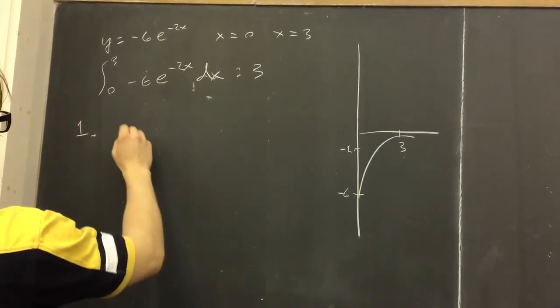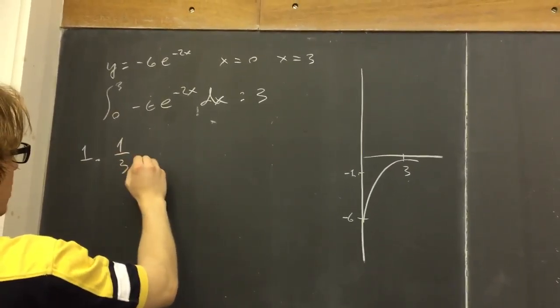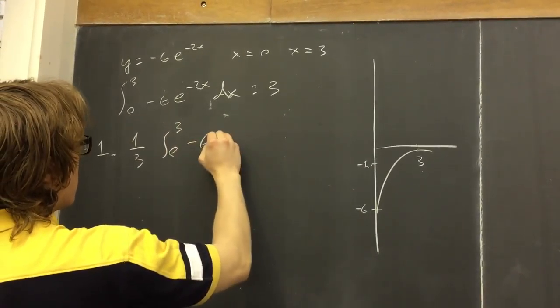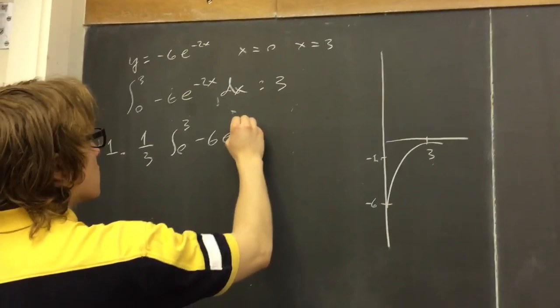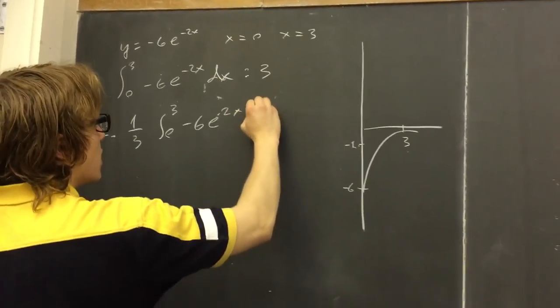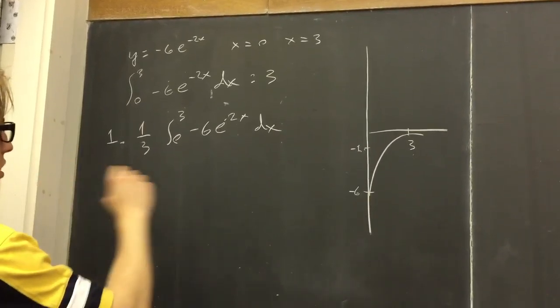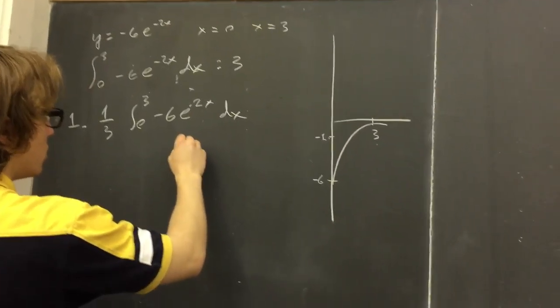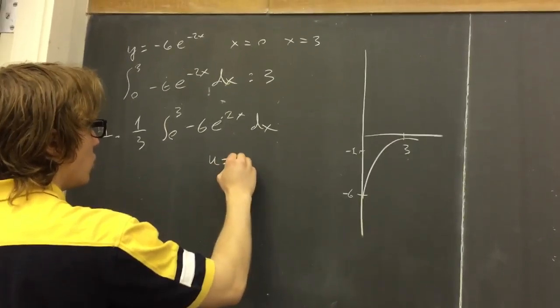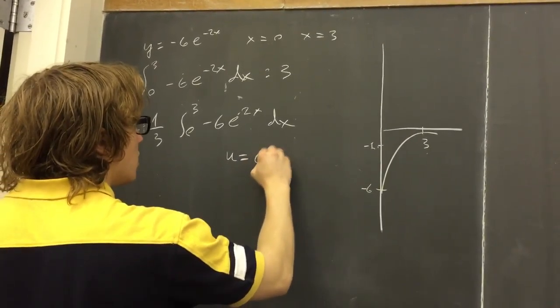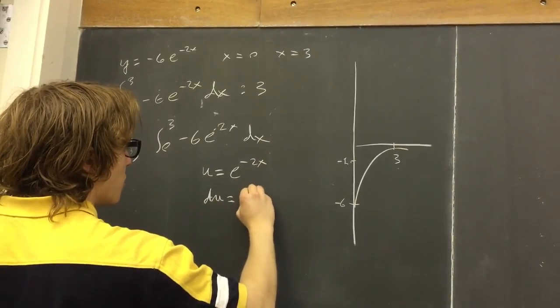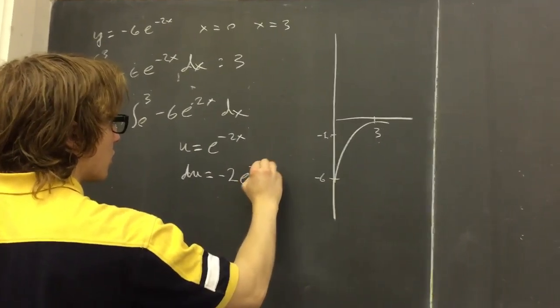So we're going to start working through it. We can multiply it times 1 third, and write it as the integral of negative 6e to the negative 2x dx. So we need to do a u-substitution in order to solve this problem. And we can set our u equal to e to the negative 2x, du equals minus 2e to the negative 2x.